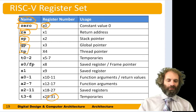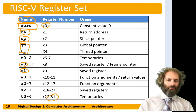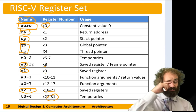There's also a global pointer and a thread pointer, which we won't talk about too much in this chapter. The remainder of the registers are divided into three groups: S, T, and A — for saved registers, temporary registers, and arguments. The S registers are used by the programmer to store variables: S0, S1, and S2 through S11, a total of 12 registers stored in X8, X9, and X18 through X27.